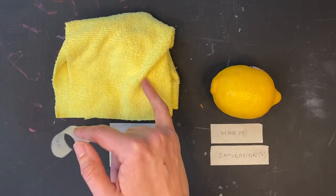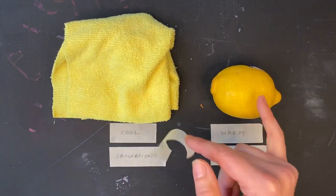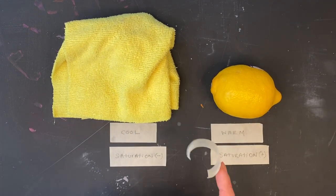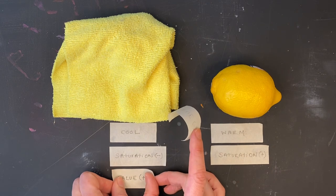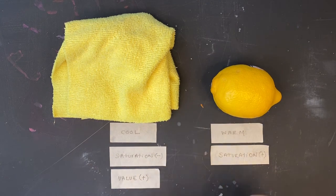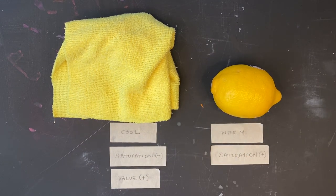My dish towel is lighter than my lemon is. I'm going to put my value plus, my higher value. Sun is higher in the sky, and my lemon is going to be my lower value.